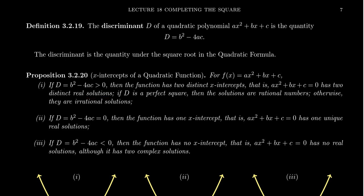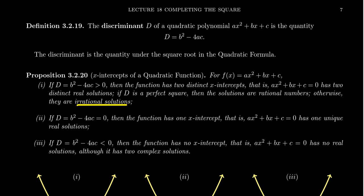When the discriminant is a perfect square, its square root will be a whole number, meaning the quadratic equation will have two distinct rational solutions — either whole numbers or fractions. If the discriminant is not a perfect square but is still positive, you'll have two distinct irrational solutions. So whenever your discriminant is positive, you'll have two solutions representing x-intercepts on the graph: perfect squares give rational solutions, and non-perfect squares give irrational solutions.